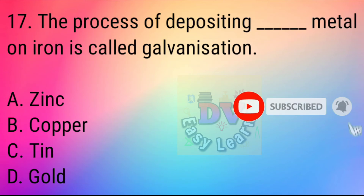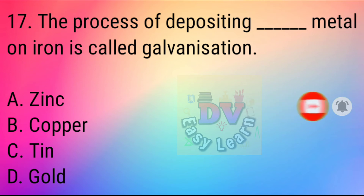Question No. 17: The process of depositing dash metal on iron is called galvanization.